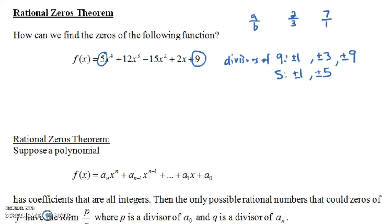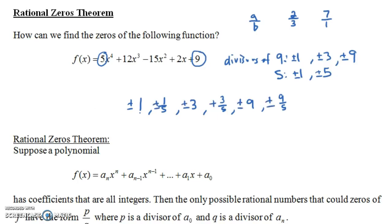So what numbers could be written as a divisor of nine divided by a divisor of five? We could do one over one, which is just one, and one over five, which is one-fifth. We could do three over one, which is three, and three over five, which is three-fifths. And then nine over one, which is nine, and nine over five, which is nine-fifths. Of course, we have plus and minus versions of all these. Notice how many possibilities we have: two, four, six, eight, ten, twelve — these twelve numbers might be zeros of this function.